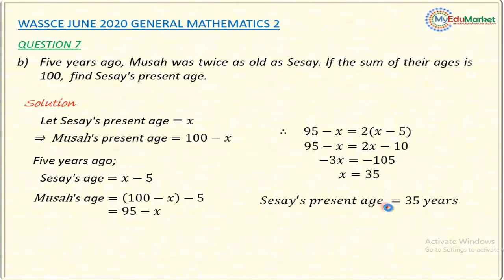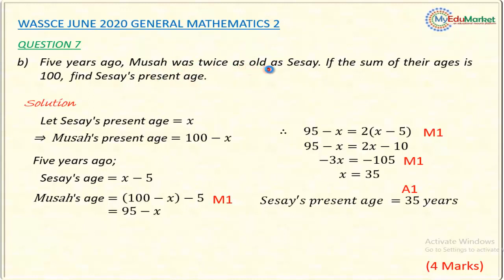Cissi's present age is 35 years. According to the official marking scheme, the first mark is for getting Musa's age five years back. The next method mark is for correctly forming the equation using the condition that five years ago Musa was twice as old as Cissi. Solving that equation earns another method mark, and stating the correct answer — Cissi's present age is 35 years — earns the accuracy mark (A1). The answer must be in statement form, as the question is stated that way. In total, there are four marks for this question.